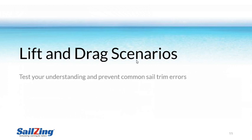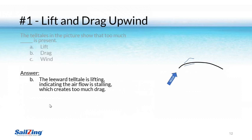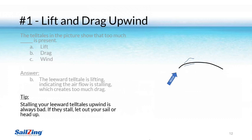Now let's look at some scenarios to test your understanding and cover some common sail trim errors. This picture shows a sail with telltales attached near the luff of the sail. Telltales help us visualize flow over the sails. The answer is B — the leeward telltale is lifting, indicating the airflow is stalling. This should be obvious from our previous discussion, but it's a common sail trim error. If you are slow upwind, use the telltales on your sail until you get used to avoiding the stall. If you're stalling, let the sail out or head up into the wind slightly to decrease the angle of attack.